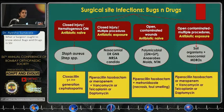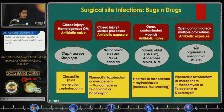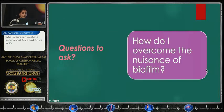Summarizing bugs and drugs in surgical site infection: for a closed injury, antibiotic-naive patient, use cloxacillin or a first/second-generation cephalosporin. For the same injury with multiple procedures and antibiotic exposure, also think of nosocomial pathogens, MRSA, and candida, and add cover accordingly. For open contaminated wounds, think polymicrobial — anaerobes, molds, NTM — and add metronidazole if suspecting anaerobes. For open contaminated wounds with multiple procedures and antibiotic exposure, consider both soil organisms and nosocomial multi-drug resistant organisms.